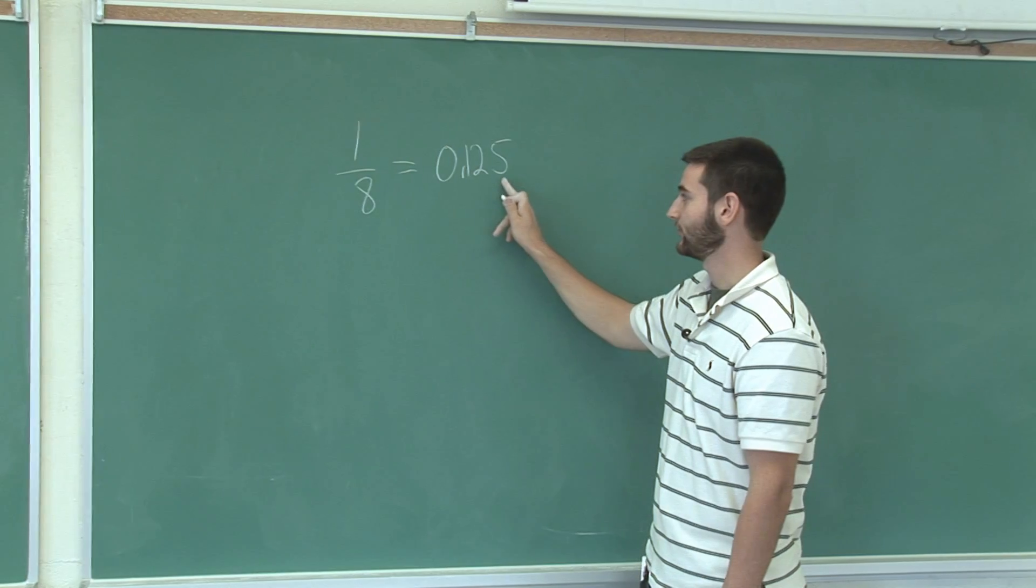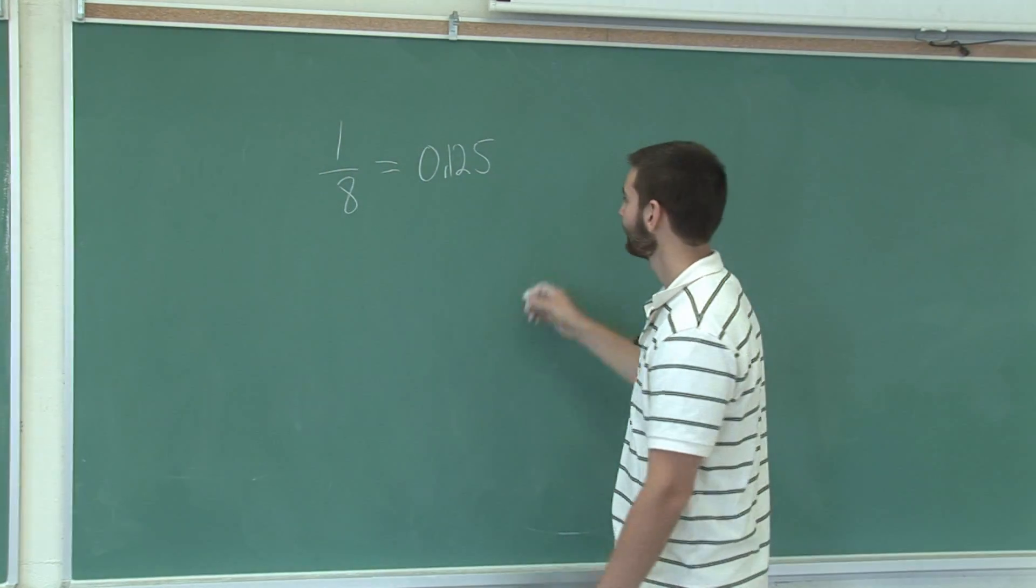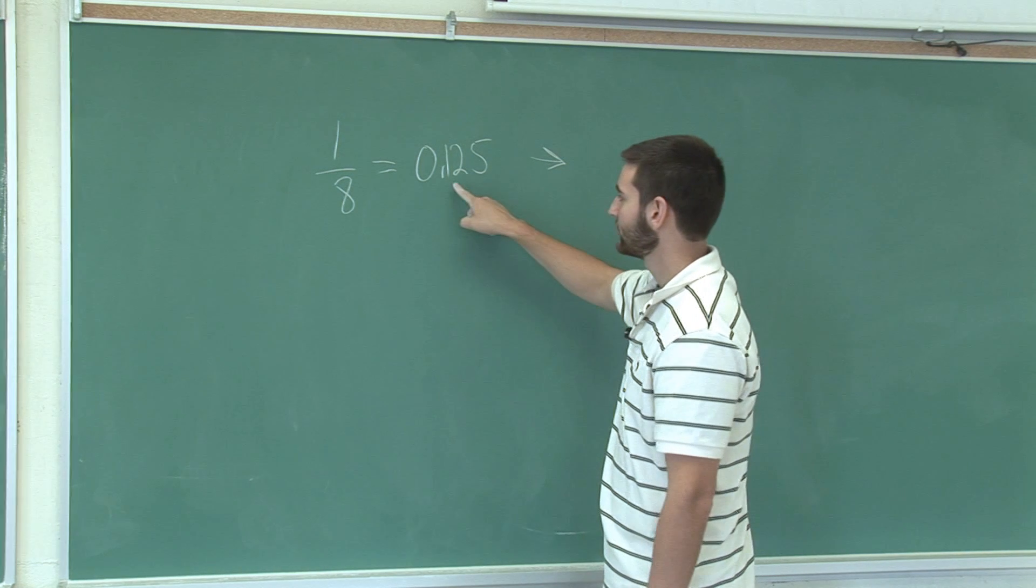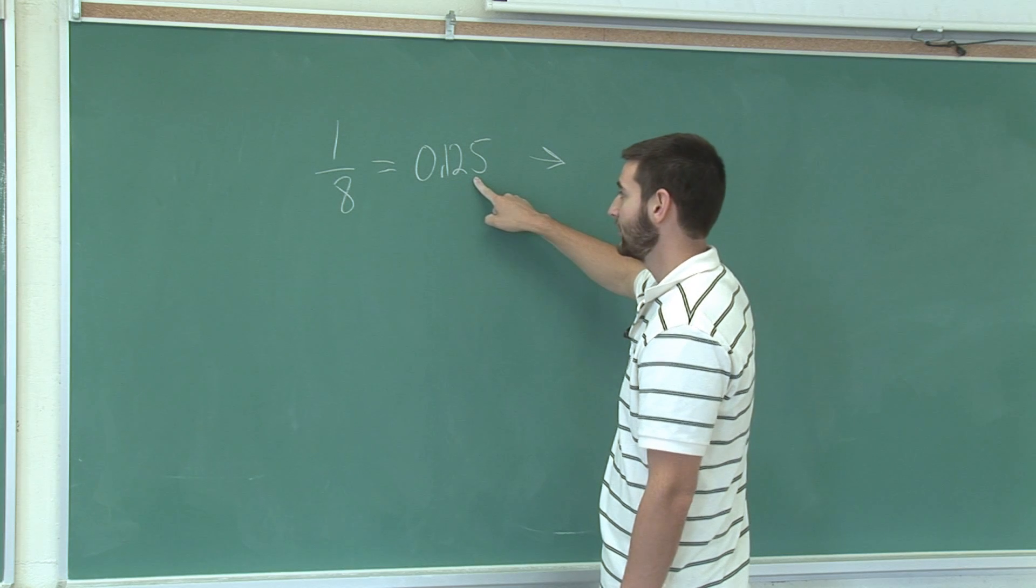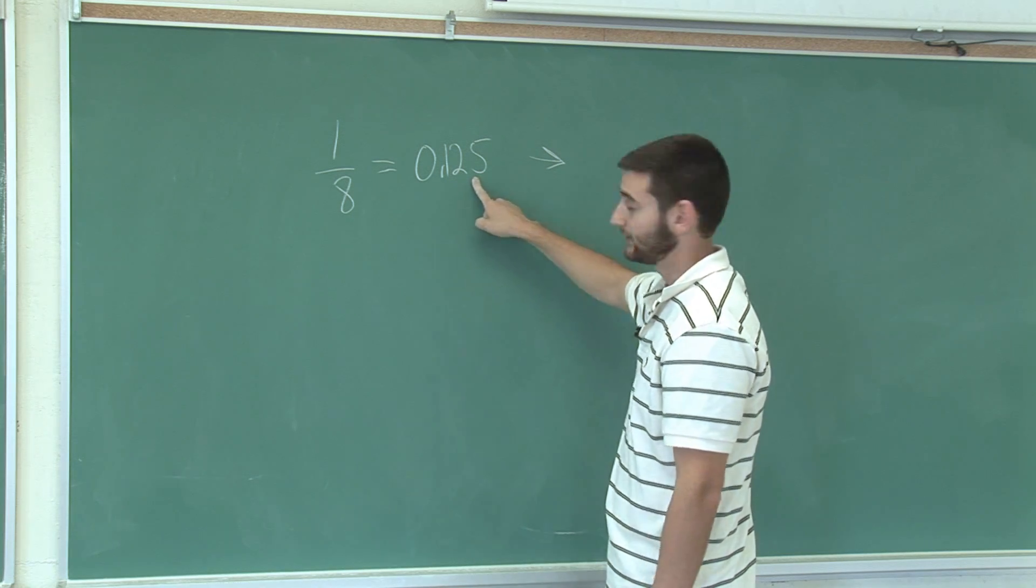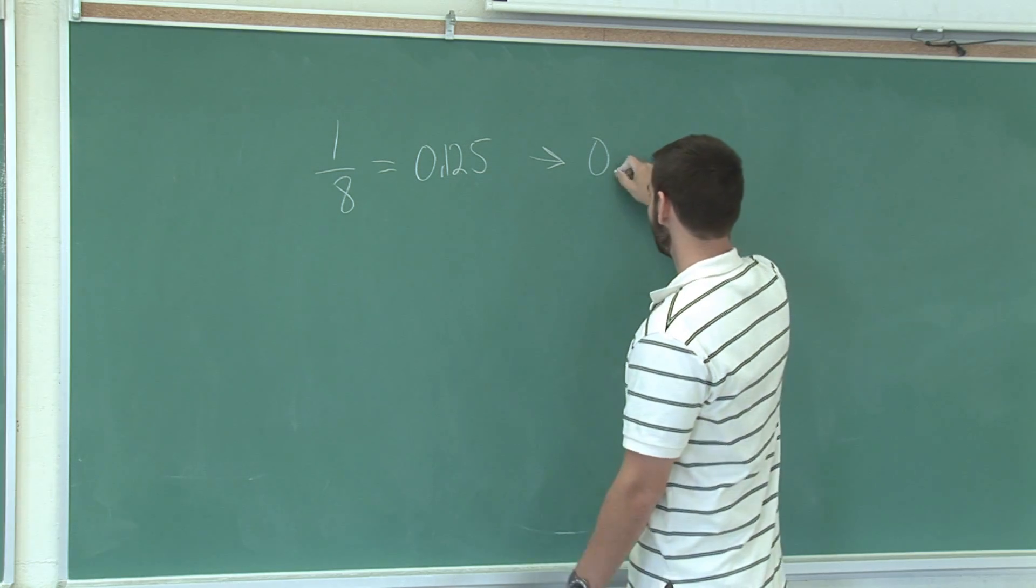Now to round this, we can round it to two decimal places or one decimal place, depending on what's required. To round it to two decimal places, we look at the two, and then the next digit is five, which is high enough to warrant rounding. This rounded to two decimal places is 0.13.